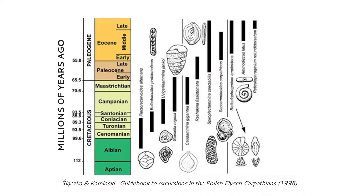Because different species of foraminifera lived at different times over their 540 million year history, identifying the foraminifera preserved in a sediment sample allows micropaleontologists to determine the geological age of the sediments. This process is called biostratigraphy and is important for relating distant bodies of marine rock to each other as we piece together Earth's geologic history and for tracing economically important petroleum source rocks.